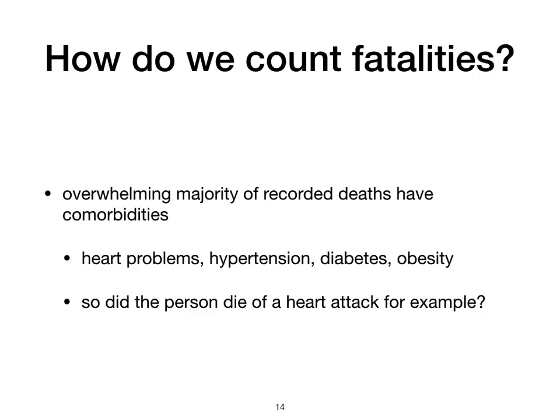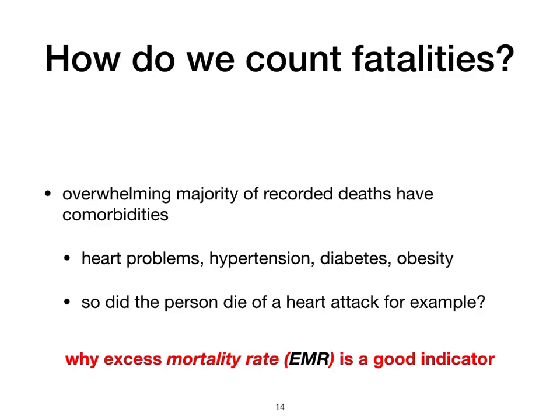The next question is: who do we count as a fatality? The overwhelming majority of recorded deaths have comorbidities — they don't just die of COVID-19, but also have a heart problem, hypertension, diabetes, obesity, or some other underlying condition. Did the person die of a heart attack if they tested positive for COVID-19? This is why excess mortality rate is a good indicator. Several studies of societies with a relatively high rate of infection have shown that the number dying is a lot higher than normal for that time of year — sometimes two or three times as high.